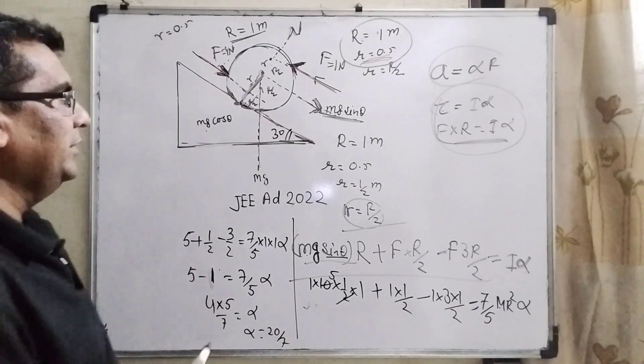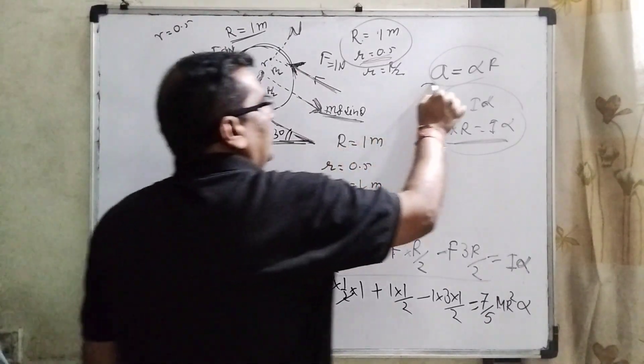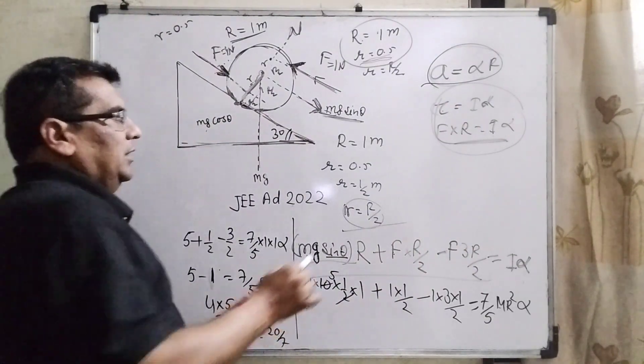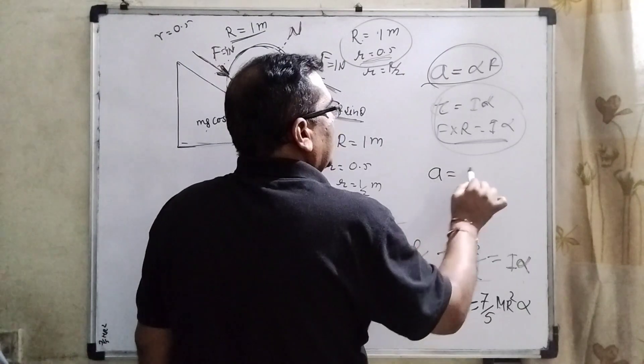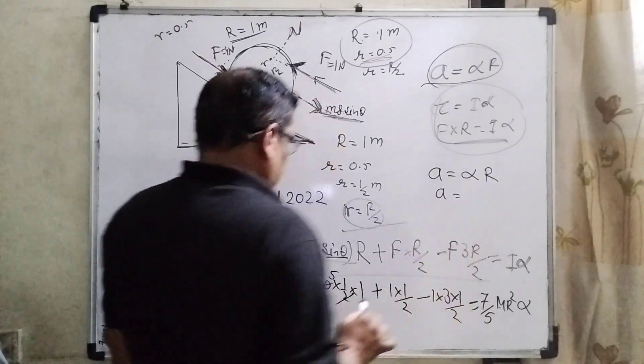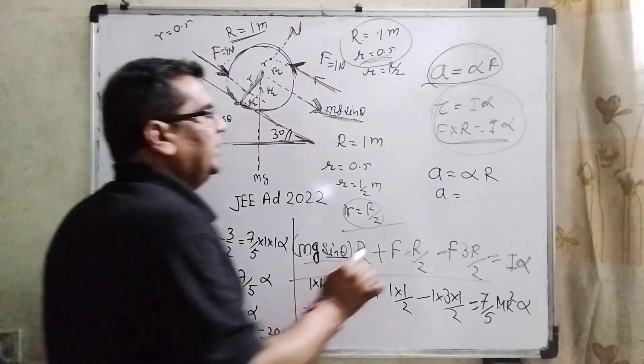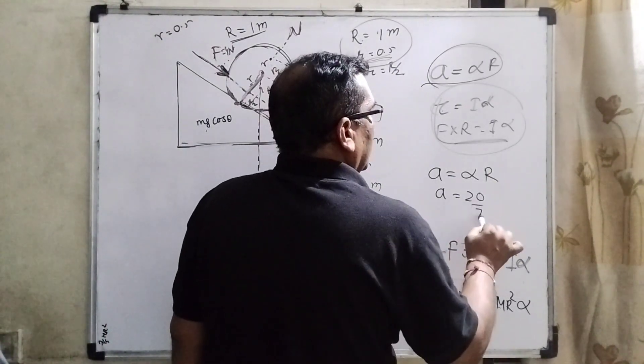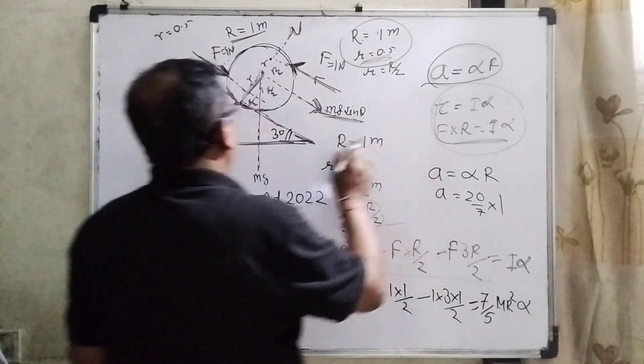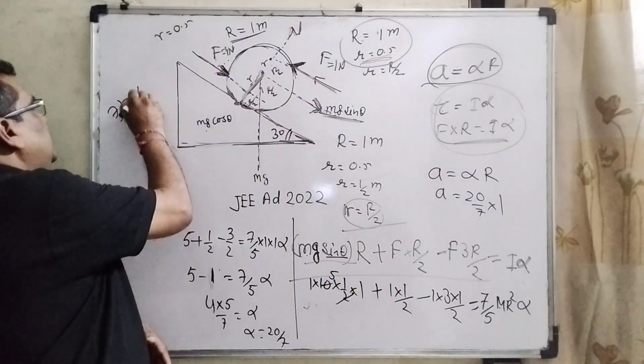And what is the relation between the linear and angular acceleration? Here alpha equal to 20 by 7. Then the relation is linear acceleration equal to alpha into r. Now what is alpha? 20 by 7 and r is already 1. Then what is the value? Then 20 by 7.